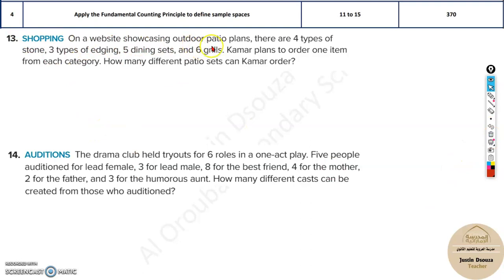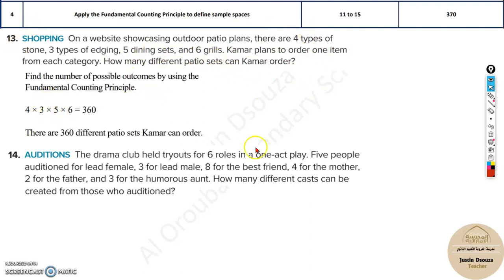On a website showcasing outdoor patio plans, there are 4 types of stone, 3 types of edging, 5 dining sets, 6 grills. So, it's again all these different categories. How do we solve? Just multiply them together, you'll get the answer.